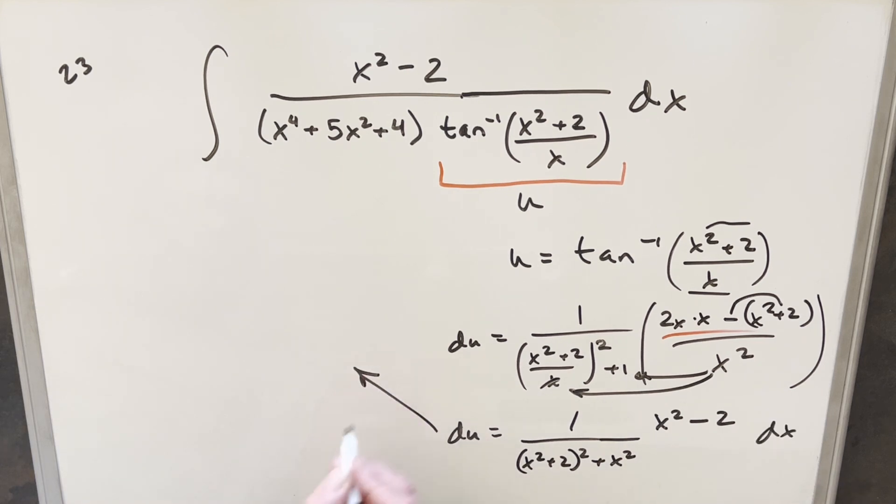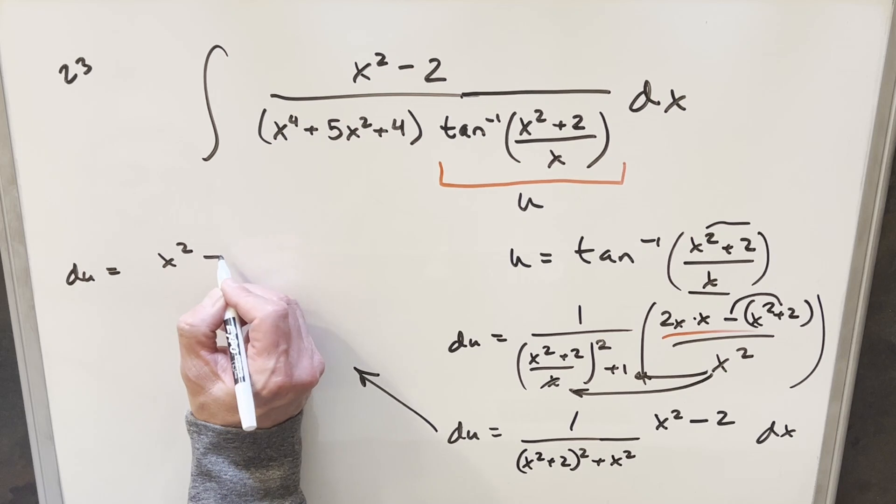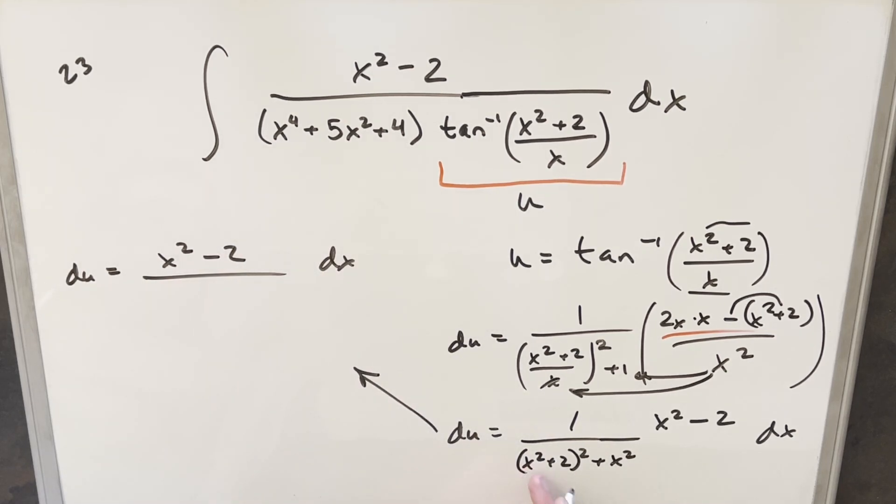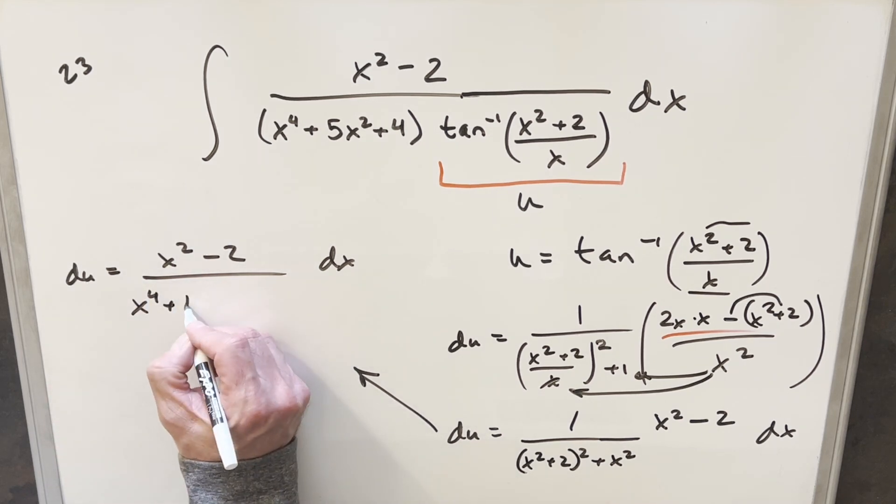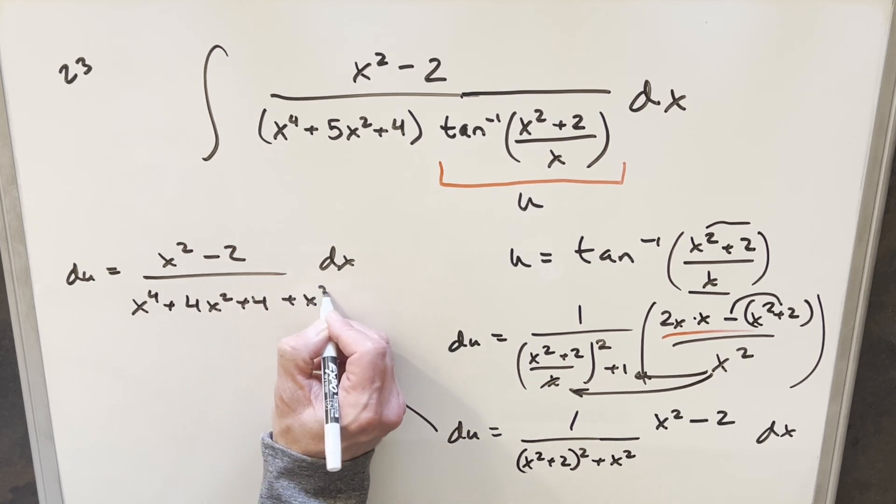Let me just come over here to get some more space to simplify this. So for our du value, we're going to have x squared minus 2 in the numerator. We'll have this dx. And then we'll multiply out this x squared plus 2 squared. So that's going to give me x to the 4th plus 2x squared plus 2x squared gives me 4x squared plus 4 plus x squared.